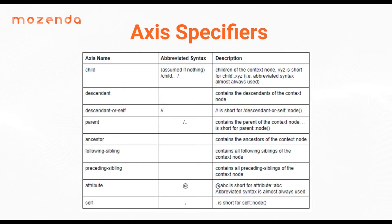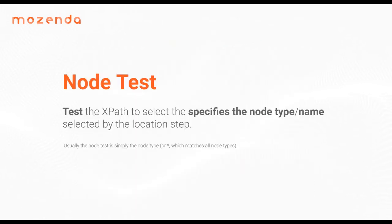When you have a dot, that signifies 'look at yourself for this information.' This happens a lot when we're creating a list based off of a title — when we need the actual title or product name, Mozenda by default will just add a dot to specify 'what you found before, I want that again.' A node test allows you to test the node you've selected. You can use the specific name — head, body, H1, P — or you can use the asterisk wildcard, which will match all nodes to what you wrote.